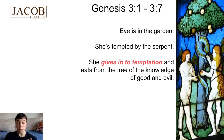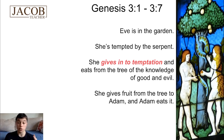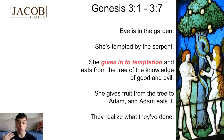So Eve gives in to temptation — she's tempted to eat from the tree by the serpent. She gives in, and then she gives the fruit from the tree to Adam. Adam also eats it. And at the end of verse 7, they realize what they've done. They realize that they are naked and that they've committed a horrible sin. But right now let's just read the text, and we'll go through afterwards and spend more time looking at specific parts.